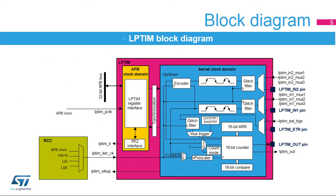The low-power timer is a peripheral with two clock domains. The APB clock domain contains the peripheral's APB interface. The kernel clock domain contains the low-power timer peripheral's core functions, and can be clocked by internal clock sources or from an external clock source through the timer's LP-TIM-N1 input.